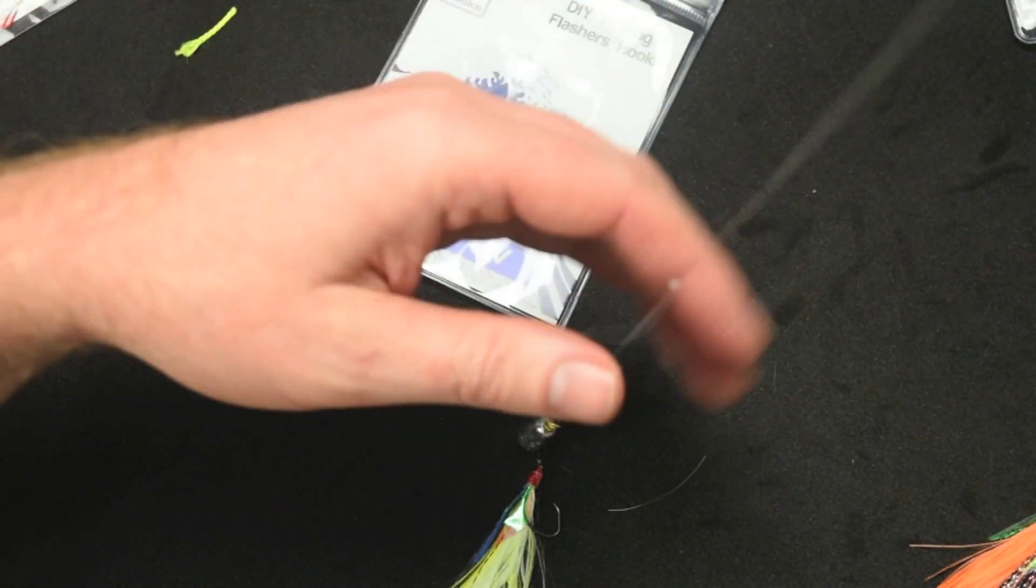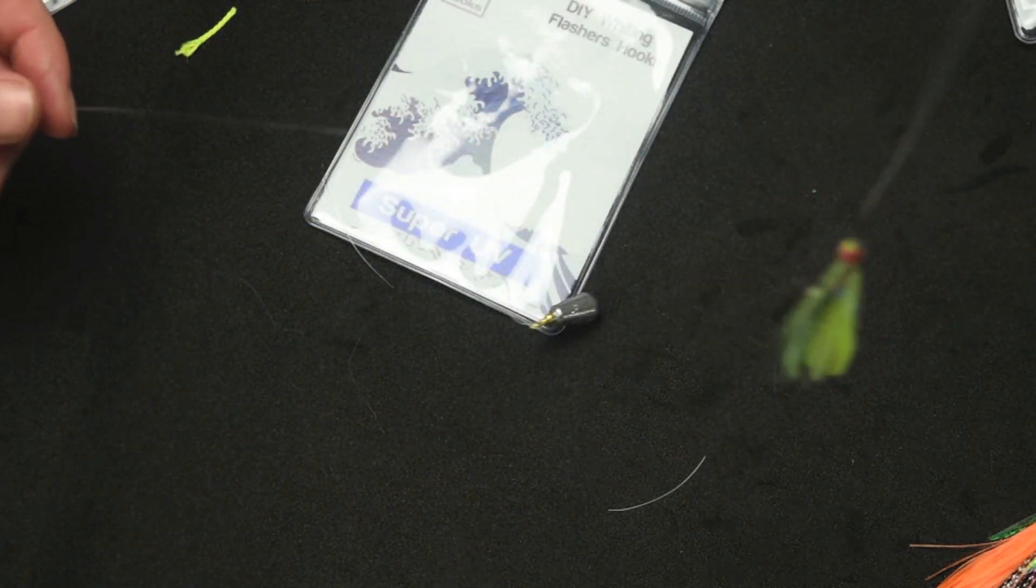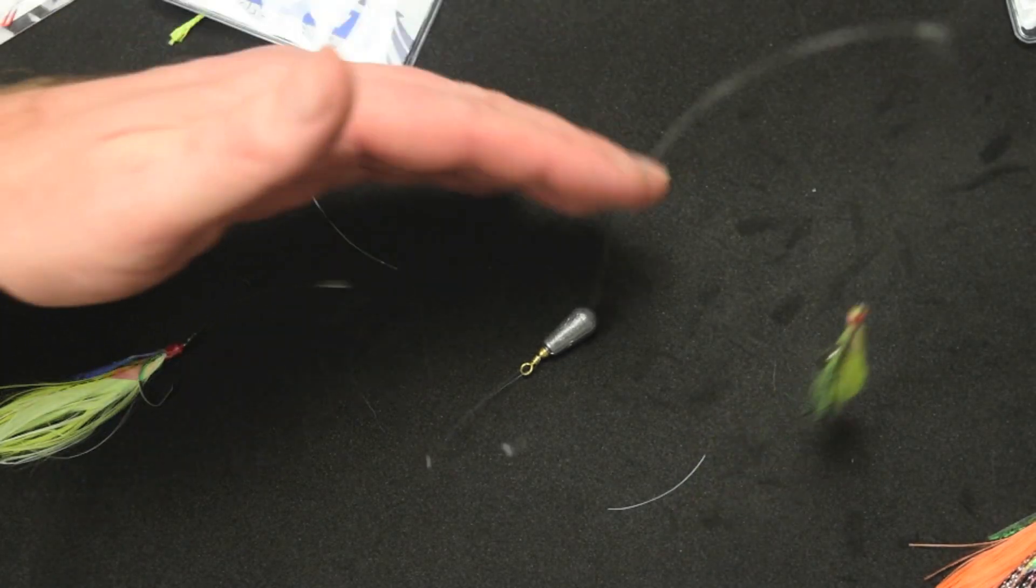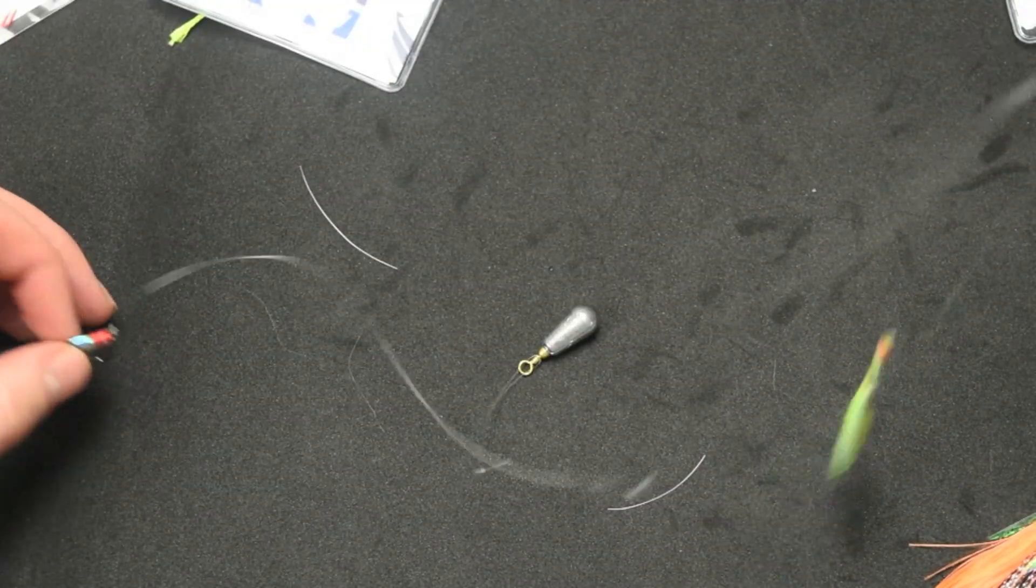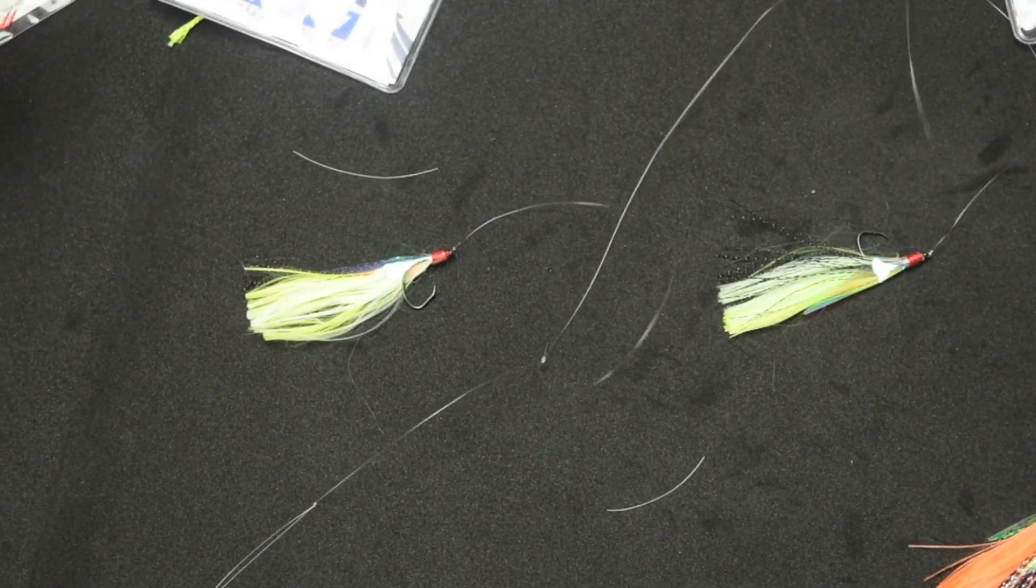Now, Whiting tend to do, Whiting do tend to love red, so it's a good idea to stick with the red. So there's a bonus rig for you, that you can turn your standard Paternoster into a double flasher rig as well.